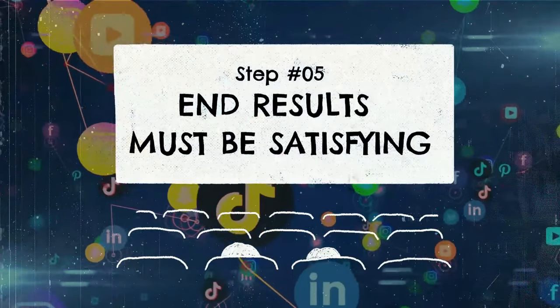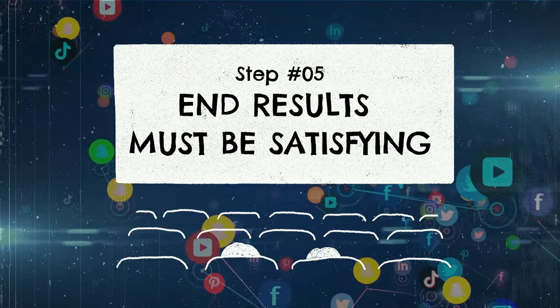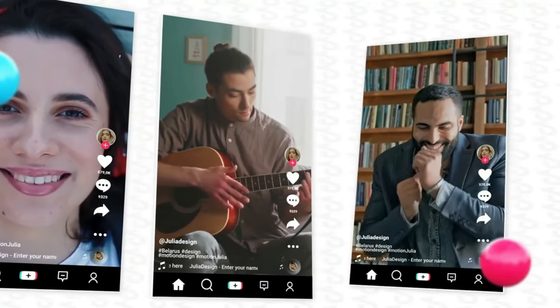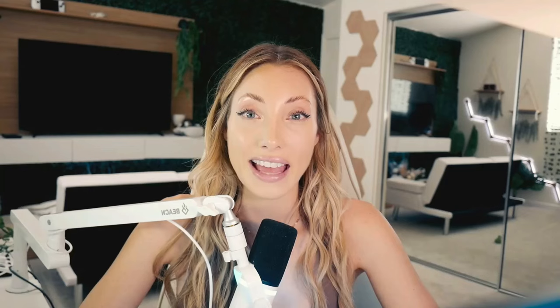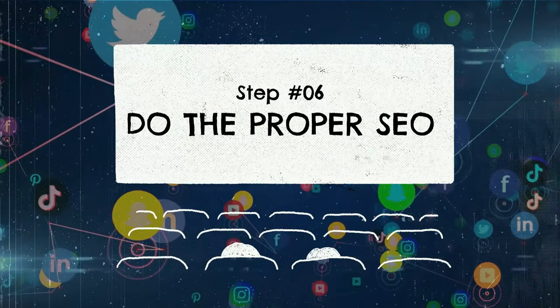Moving on to step five, which is the most important: making sure the end result is actually satisfying and shareable. Although you might hook the first person who views your video, they're not going to share it with the next person unless you give them an actual satisfactory result.